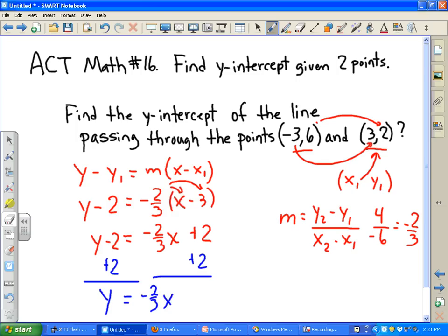So your slope is negative 2 thirds x, and your y-intercept is 4. So in this problem, your y-intercept would be positive 4.